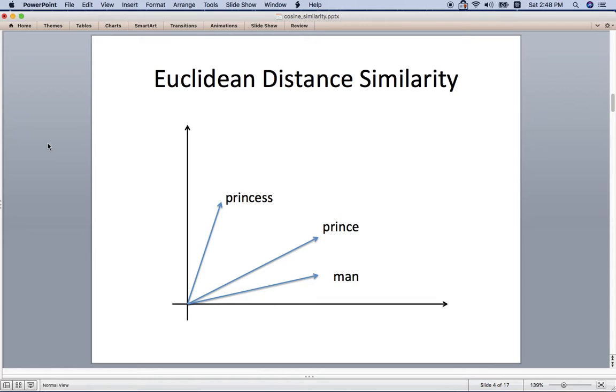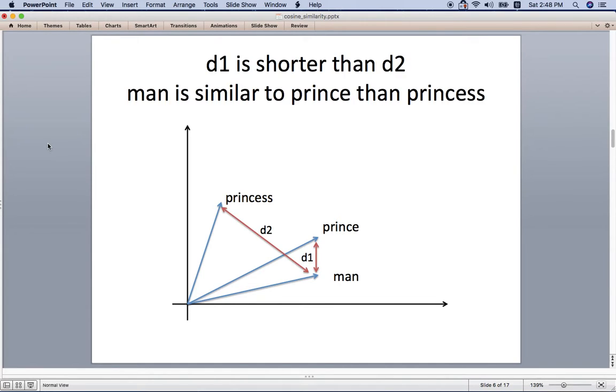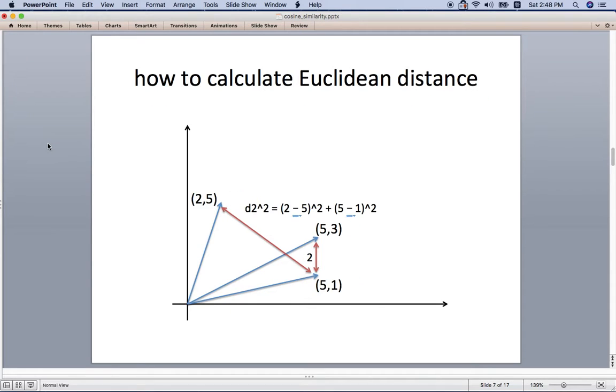Let's check out the Euclidean distance similarity first. Here I have three examples: princess, prince, and man. As you can see, the distance between prince and man is closer than princess and man, so we can say that the prince and man similarity is higher than the princess and man.